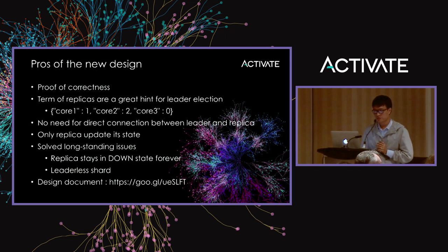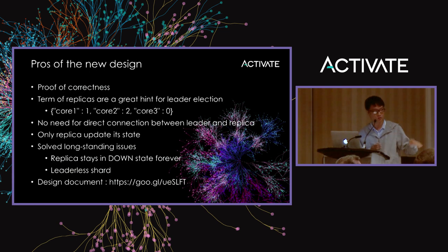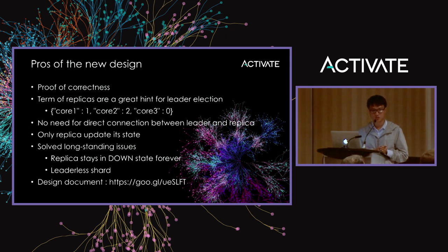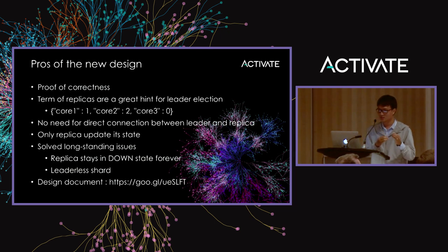What are the pros of the new design? It turns out we can prove it correct. What we prove is that a replica cannot become leader if it missed any updates — proven by contradiction. If you want to read the proof, check the design document linked below. We now have a very powerful tool for leader elections. Just by looking at term values, we can determine which replica should become leader — and even if the top candidate is lost, we can determine which remaining replica is closest to the leader.